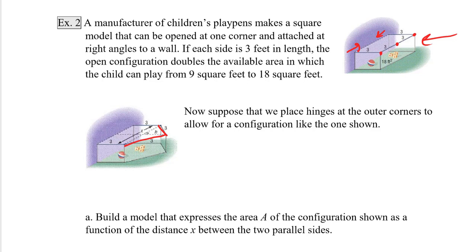Part A, we're going to build a model that expresses the area A of the configuration shown as a function of the distance x between the two parallel sides. So it might be easier if I redraw this as if we're looking down on it. So this is 3, this distance here is x, this is 3, this is 3, and this is 3. And then we've divided this shape into a rectangle and a triangle with a height h. So in order for us to find the area, we need to write the area of the rectangle and the area of the triangle, and we would add them together. So the area of the rectangle has got to be the length times the width. In this particular case, that gives us 3 times x.